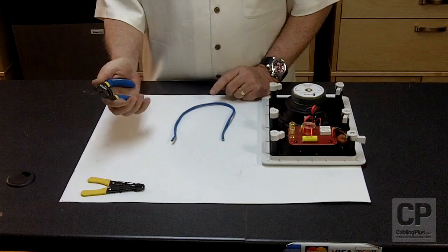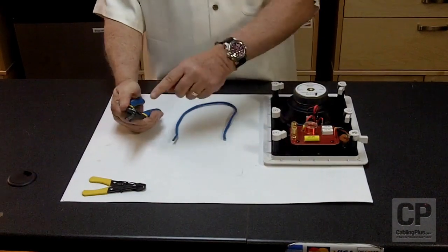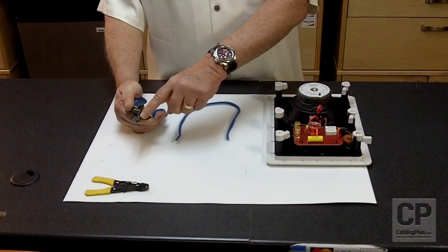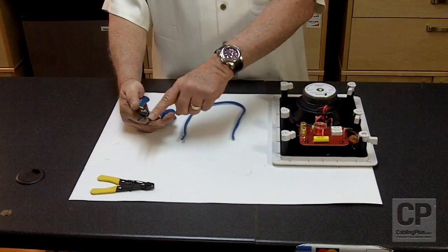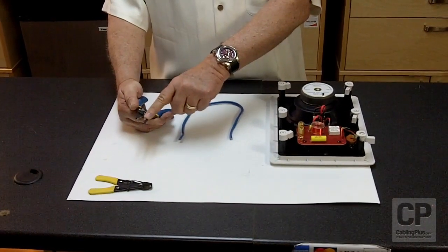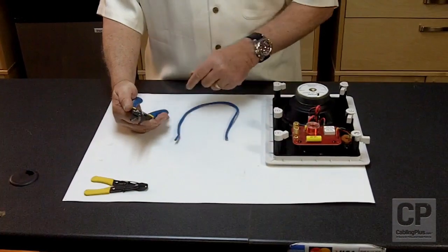Or I prefer, this happens to be a Klein stripper and it has pre-designated hole slots for your various cables. Like this one will do 12 gauge, 16 gauge, 18 gauge, 14 gauge, etc.